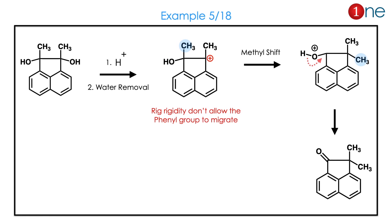Let us look at the next question. You have a fused ring system with a diol. Cation formation occurs — since the system is symmetrical, it will be the same. But which group migrates: phenyl or methyl? Phenyl cannot migrate because ring rigidity does not allow it. So the only possibility is methyl migration, and the final product is the ketone.